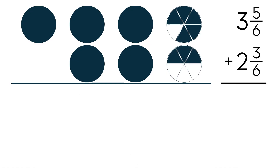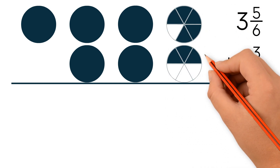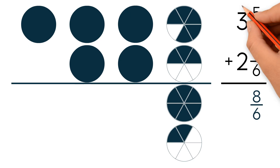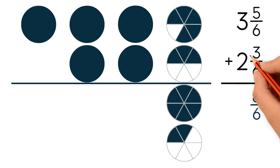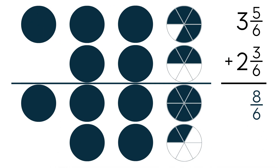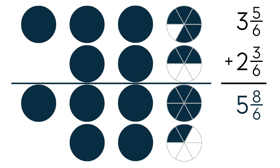Let's add the fractional part. 5 sixths plus 3 sixths gives us 8 over 6. Now we add the whole number parts. 3 plus 2 equals 5. Our answer is 5 and 8 over 6.